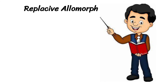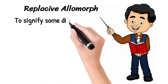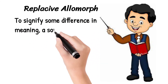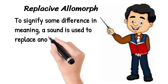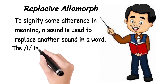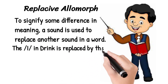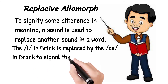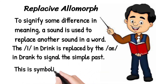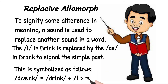Coming towards the replacive allomorph: replacive allomorphs are used to signify some difference in meaning. A sound is used to replace another sound in a word. For example, the sound /ɪ/ in 'drink' is replaced by the /æ/ in 'drank' to signal the simple past.